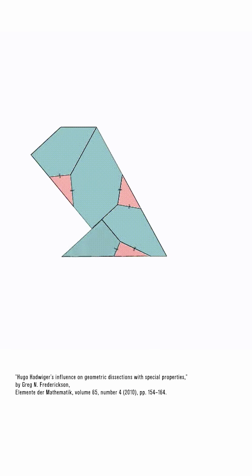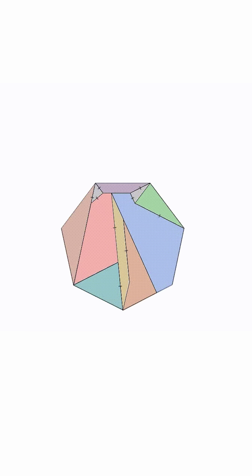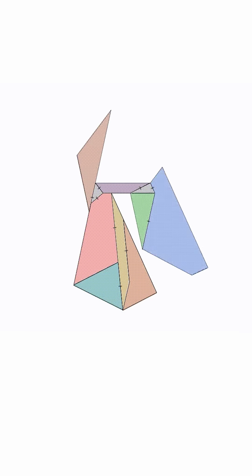Greg Fredrickson made these great twist-hinged dissections where the pieces rotate out of the plane of their hinges. Watch as a regular heptagon twist hinges into a square.